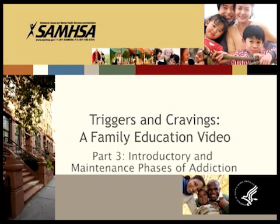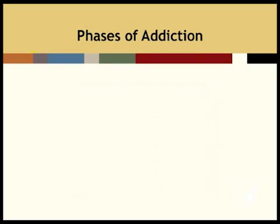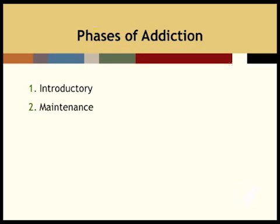You are about to watch a video produced by the Substance Abuse and Mental Health Services Administration. Let's talk about the phases of addiction and how the conditioning process develops. There are four phases of the addictive process: introductory, maintenance, disenchantment, and disaster.